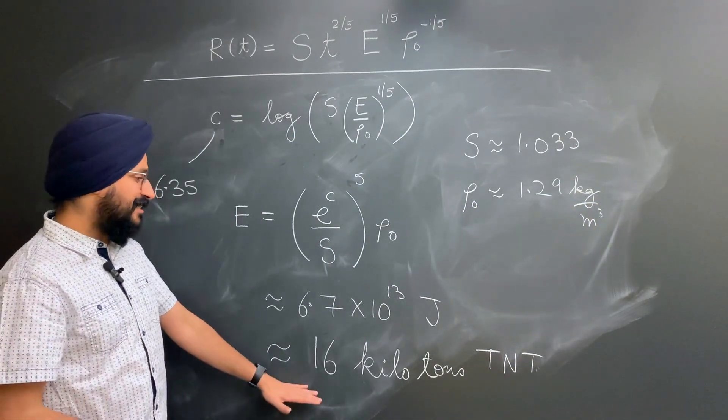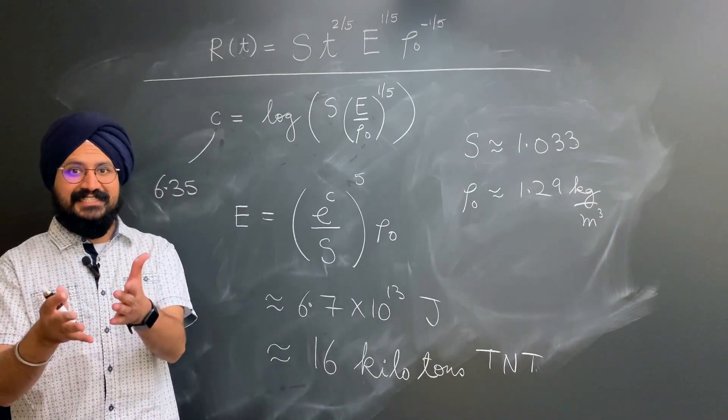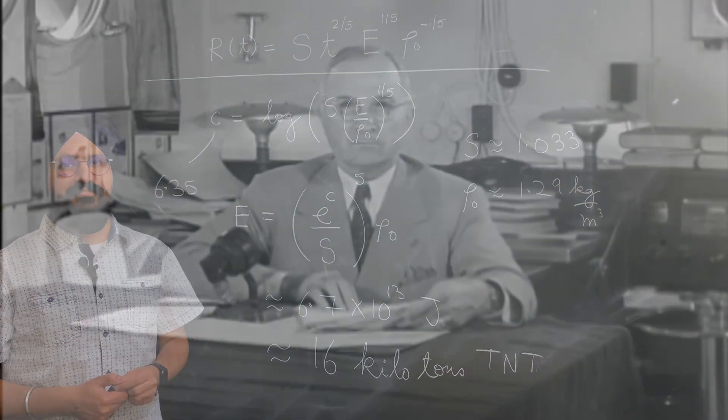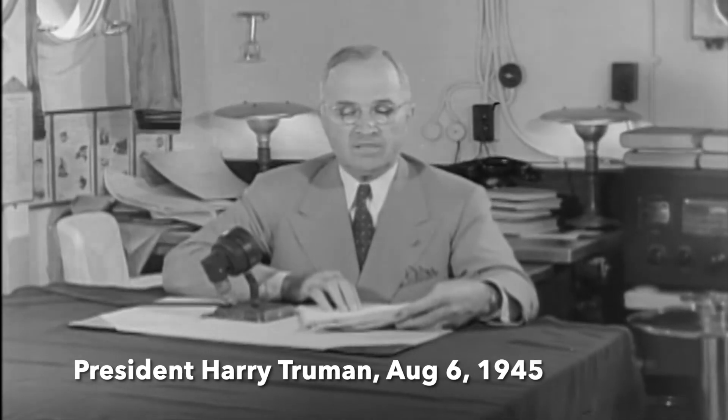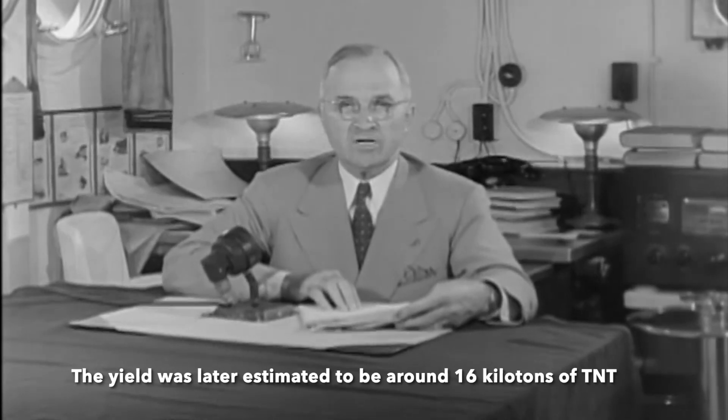Incidentally, this is also roughly the same amount of energy that was released in the bomb that was dropped on Hiroshima just a few weeks later. A short time ago, an American airplane dropped one bomb on Hiroshima and destroyed its usefulness to the enemy. That bomb has more power than 20,000 tons of TNT.